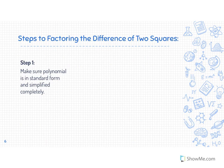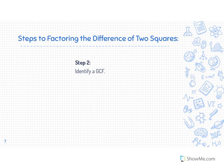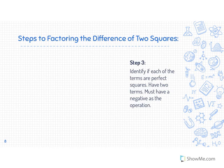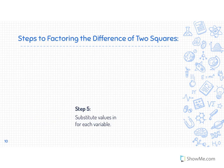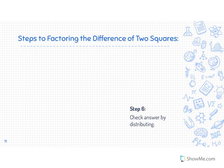Steps for factoring the difference of two squares. Step one: make sure the polynomial is in standard form and simplified completely. Step two: identify a GCF — if there is one; if not, skip step two. Step three: identify if each of the terms are perfect squares — double-check the numbers are perfect squares, the variable exponents are even, there are exactly two terms, and there is a negative sign between them. Step four: determine each term's perfect square roots. Step five: substitute values in for each variable. Step six: check your answer by distributing.